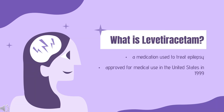Levodiracetam, sold under the brand name Keppra among others, is a medication used to treat epilepsy. It is used for partial onset, myoclonic, or tonic-clonic seizures and is taken either by mouth as an immediate or extended release formulation, or by injection into a vein. Levodiracetam was approved for medical use in the United States in 1999 and is available as a generic medication.